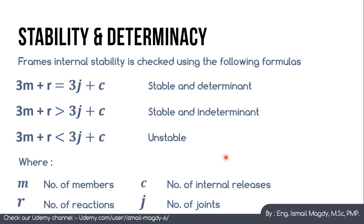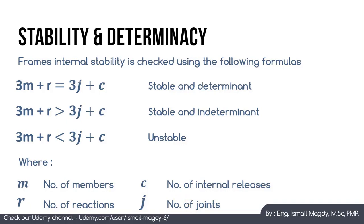Now we are done with beam stability and determinacy. What about frames? Frame stability and determinacy is checked using these formulas: 3M plus R equals 3J plus C means stable and determinate; 3M plus R greater than 3J plus C means stable and indeterminate; 3M plus R less than 3J plus C means unstable. Here M is the number of members, C is the number of internal releases, R is the number of reactions, and J is the number of joints.